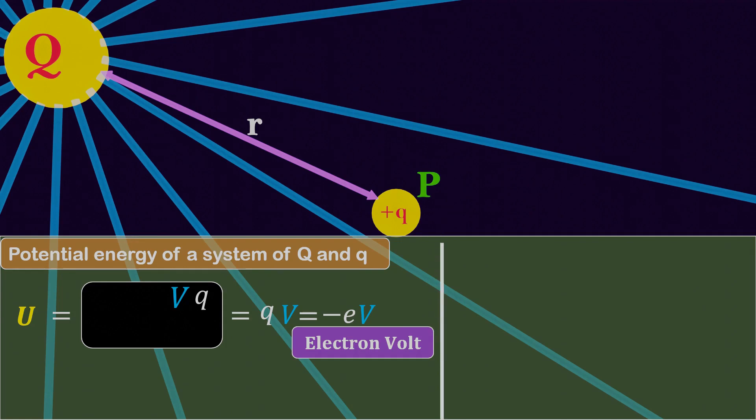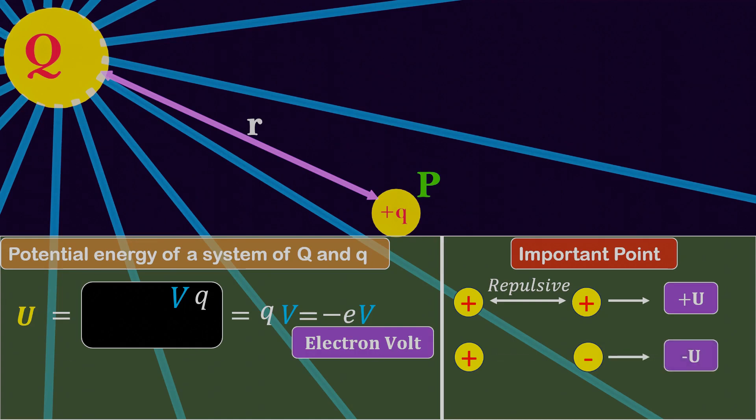At the end, let's see some important points related to potential energy. When dealing with two positive charges, the potential energy will be positive and the force will be repulsive. However, if one charge is positive and the other is negative, the potential energy will be negative. In this case, the force is attractive, but the energy is negative.